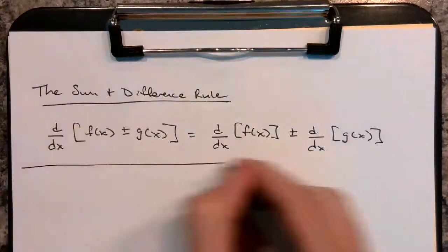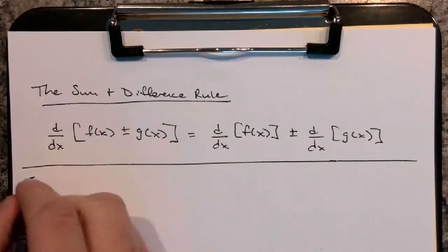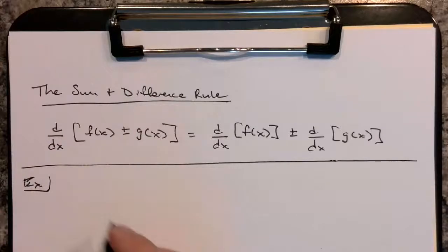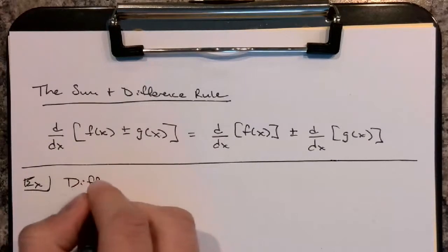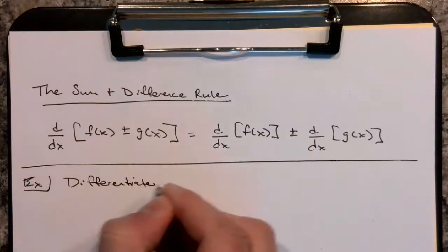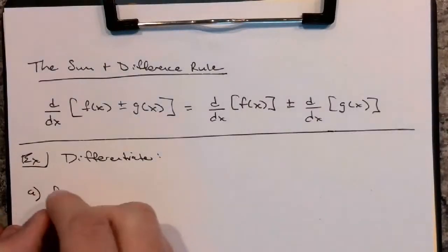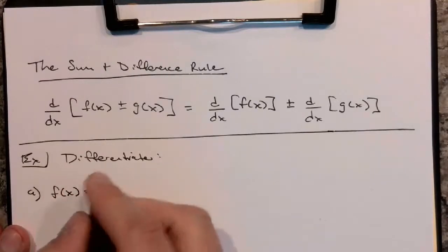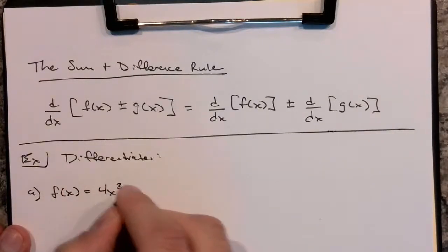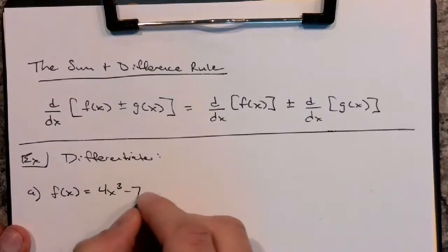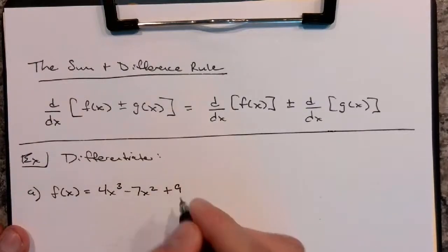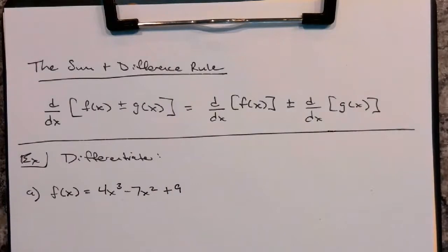And that's how we'll see it in the examples we're about to look at. For example, to differentiate — which means find the derivative — the first one: f(x) = 4x³ - 7x² + 9. When you're doing this, the first thing you should look at is: do I need to rewrite any of the terms into a form that I know how to differentiate?